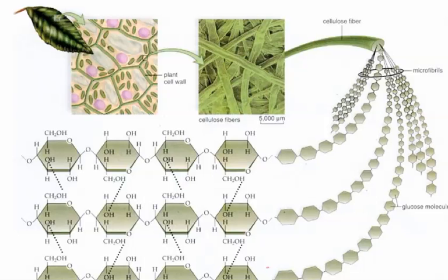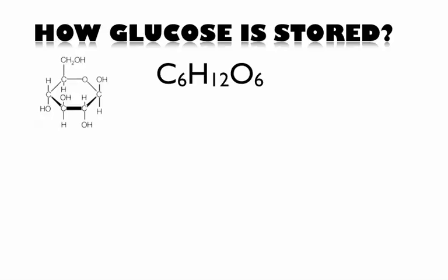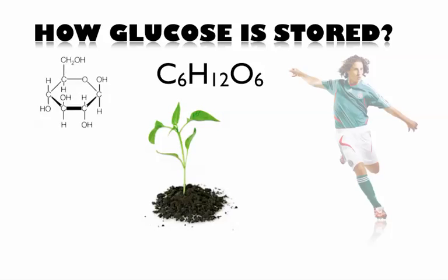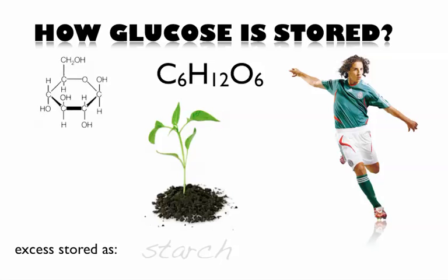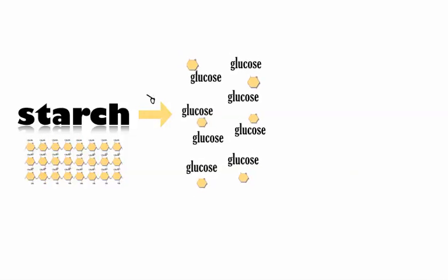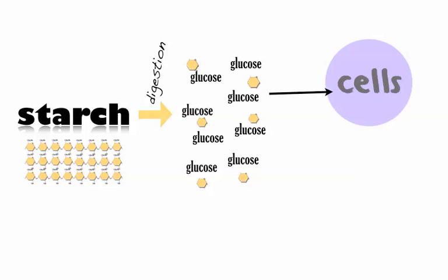Here is cellulose in the cell wall. If you zoom in to one fiber you'd finally see the molecule, and each unit is like a little glucose. How is glucose stored? It depends if you're a plant or an animal. If you're a plant, you store excess glucose as starch, like in a potato. Animals take glucose and store excess as glycogen, which hangs out in our liver. Starch is too big to enter our cells, so it has to be digested first. Then glucose enters your cells and is used for cellular respiration — energy making.